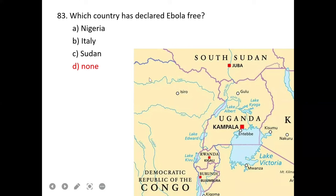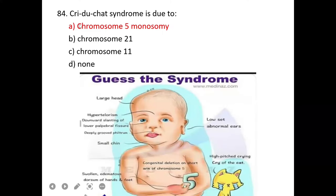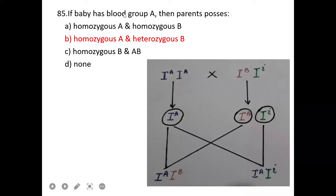Which country has declared Ebola free? Congo is the country that has been declared Ebola free. D is correct. Cri-du-chat syndrome is due to monosomy in chromosome number 5. If baby has blood group A, then parents can have blood group A heterozygous or other compatible combinations.